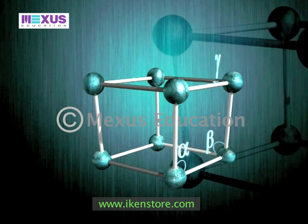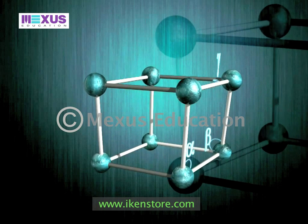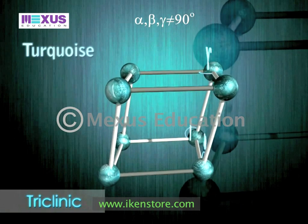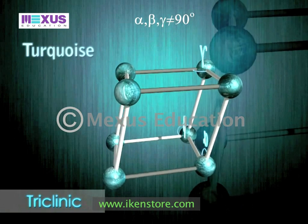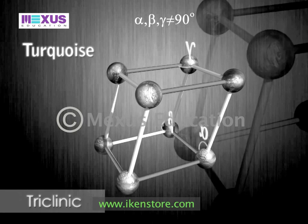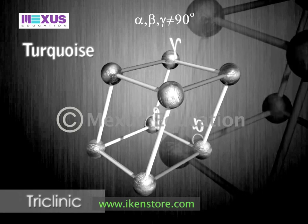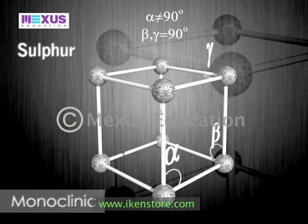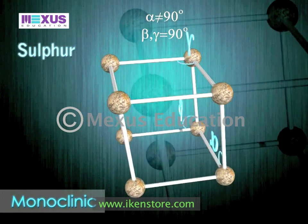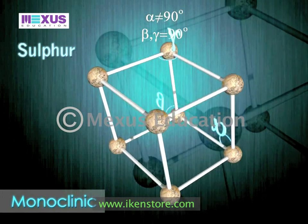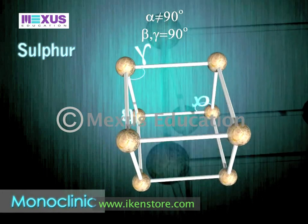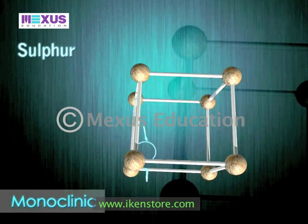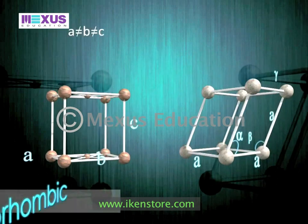There are seven lattice systems. The least asymmetrical system is the triclinic system — turquoise is an example of the triclinic lattice. The next system is the monoclinic system, and sulfur is an example of a monoclinic crystal.